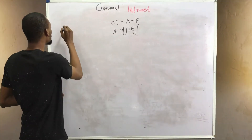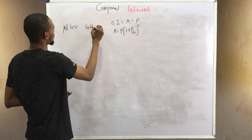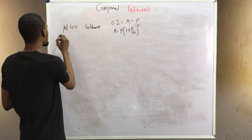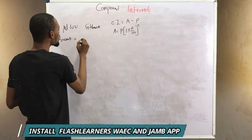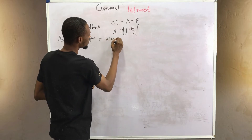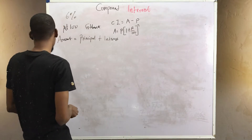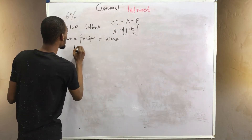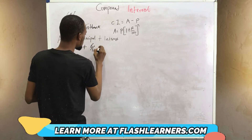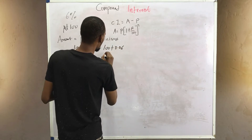But for compound interest, if I take a loan of 100 naira from GT Bank, the amount after the first year equals principal plus interest. So let's say the interest is six percent: the amount at the end of the first year will be 100 plus six over 100, which gives you 100 plus 0.06, giving you 106.